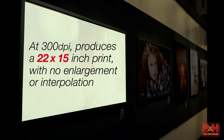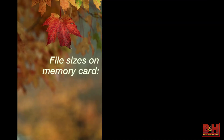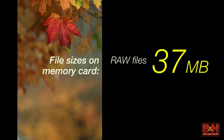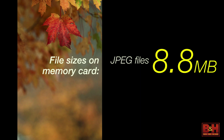Obviously we can enlarge from there with great effect. In terms of file sizes on the memory card: a RAW file is going to be about 37 megabytes per click of the shutter. A full resolution fine JPEG would be roughly 8.8 megabytes, and that will vary depending on the scene.